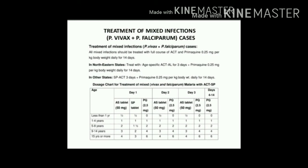The dosage chart for mixed infection treatment with ACTSP shows age-group-specific preparations for infants, 1–4 years, 5–8 years, 9–14 years, and 15 years and above. Treatment is given on days 1, 2, and 3. From day 4 to day 14, primaquine is given at a dose of 2.5 mg, but it is contraindicated in infants.